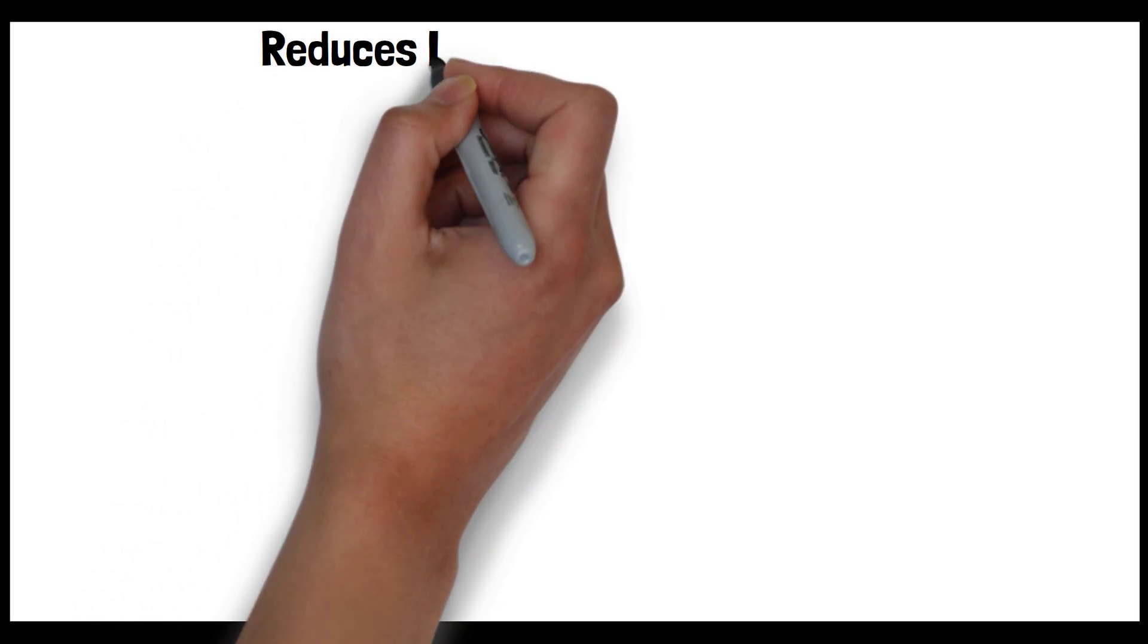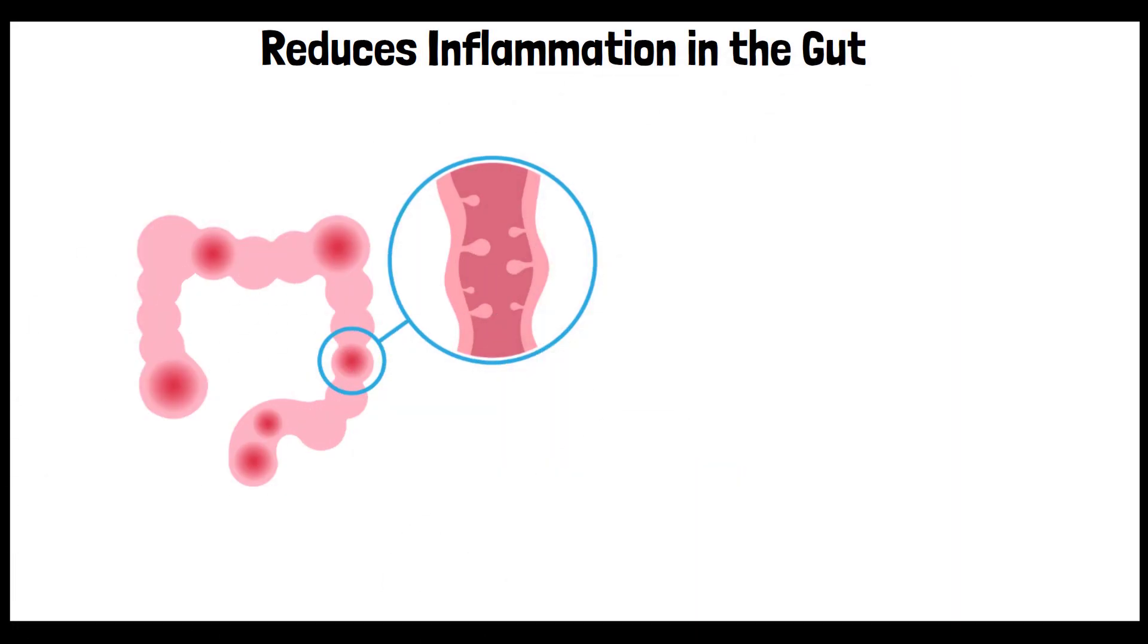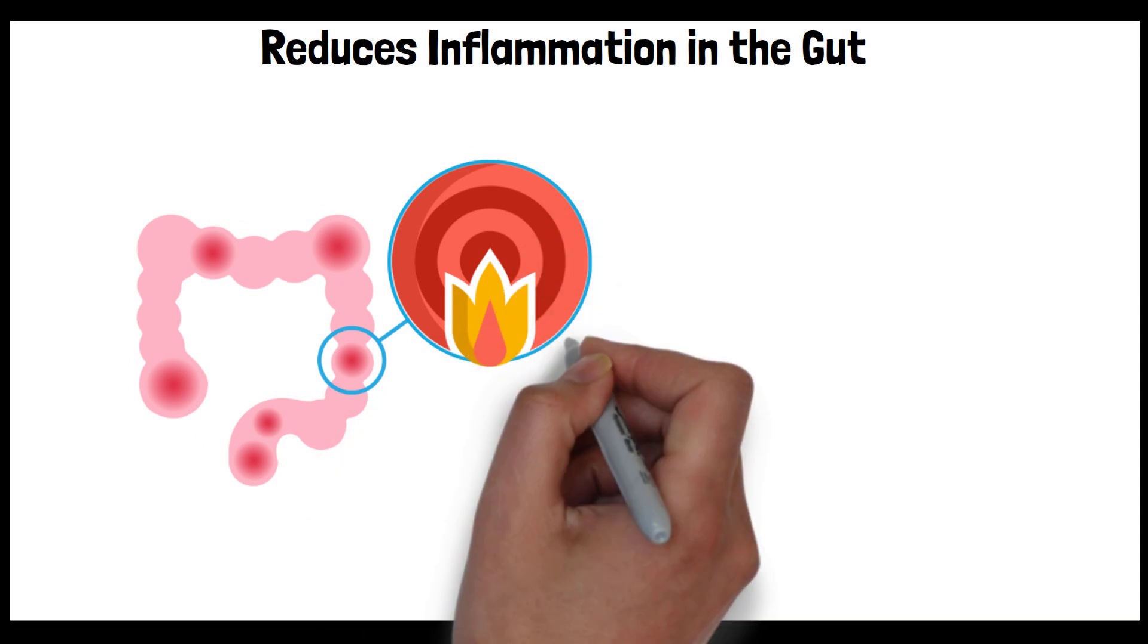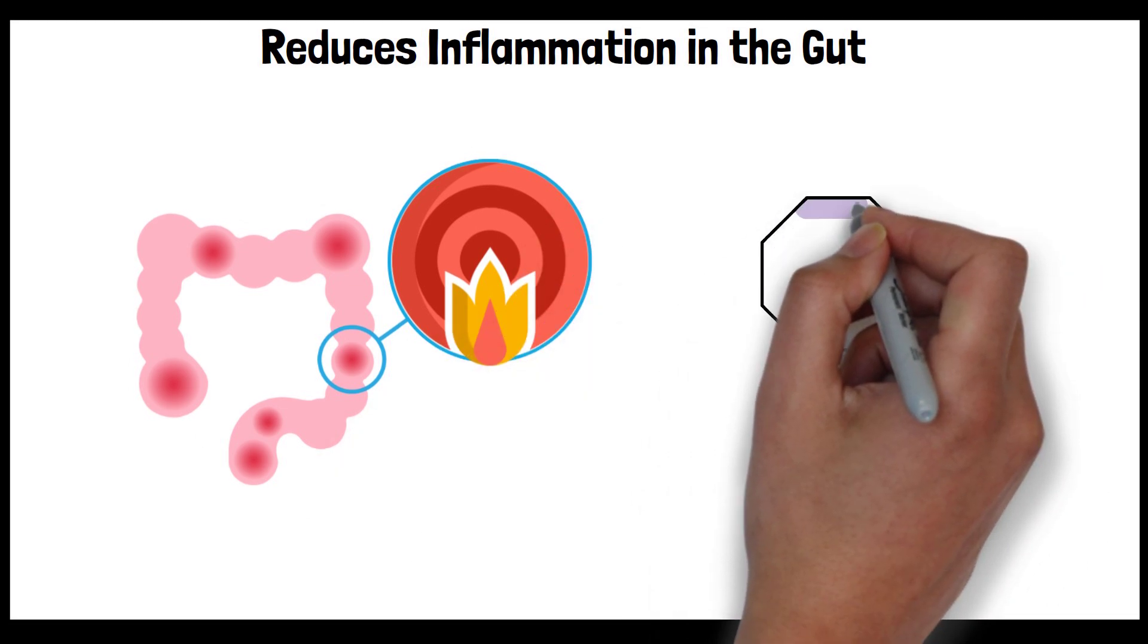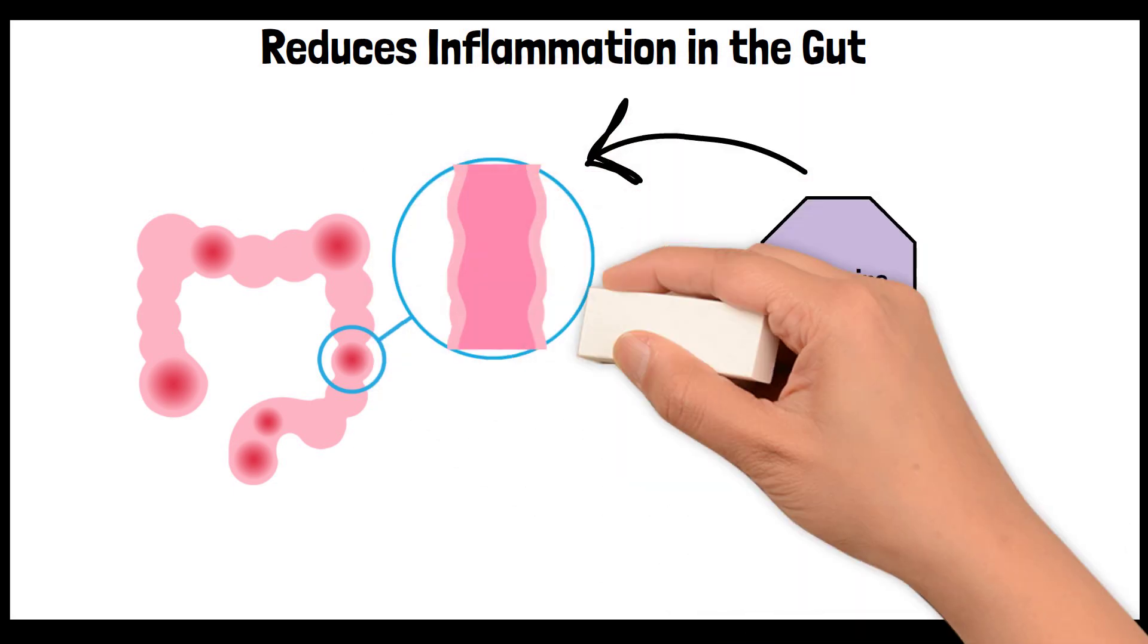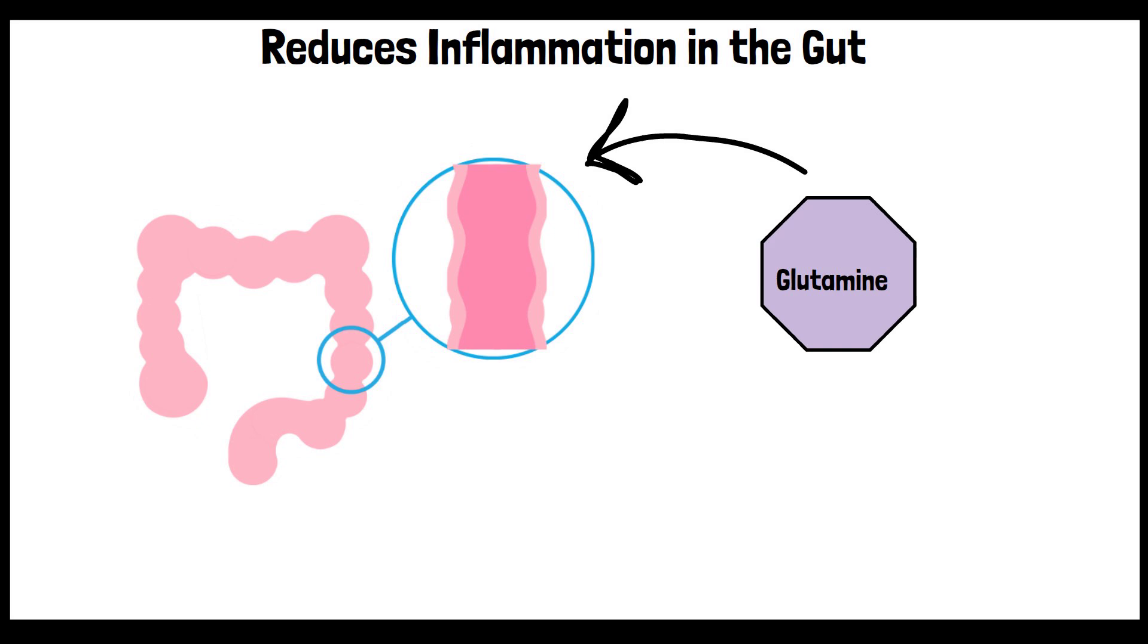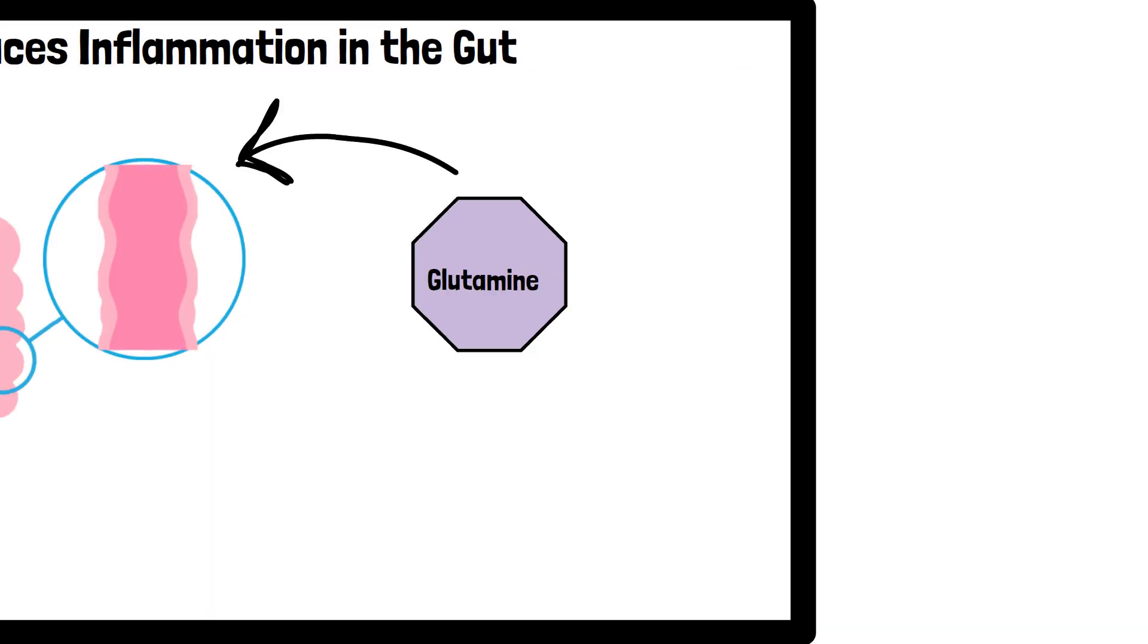Four, reduces inflammation in the gut. Conditions like IBS and IBD are characterized by inflammation in the gut, leading to discomfort and other symptoms. Glutamine can help reduce this inflammation by supporting the repair and maintenance of the gut lining, and possibly by influencing immune signaling pathways that mediate inflammatory responses.